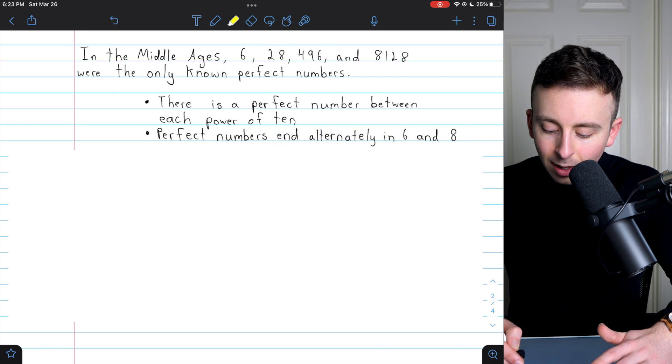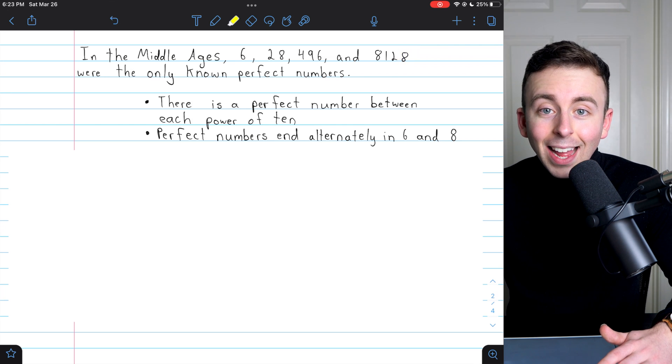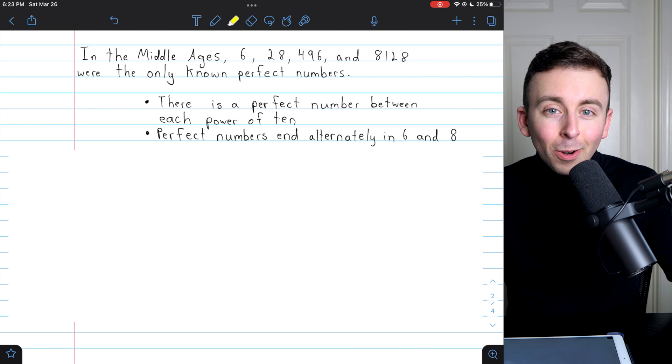Another conjecture. Perfect numbers end alternately in 6 and 8. As you can see, the first four follow that rule. 6, 8, 6, 8. So maybe the next one ends in 6 as well. What do you think? Were these conjectures true or not?